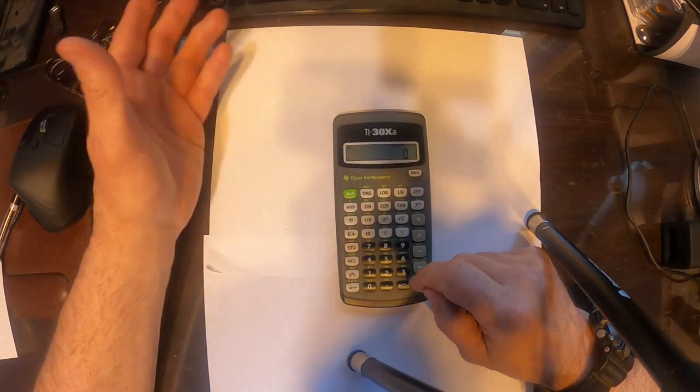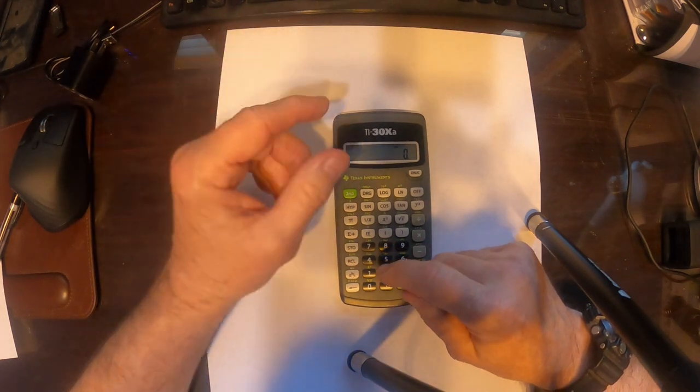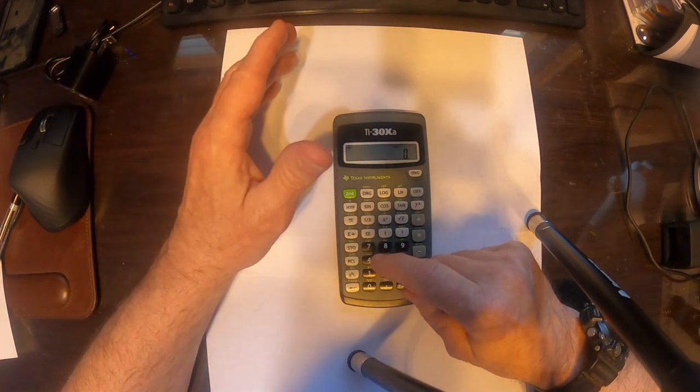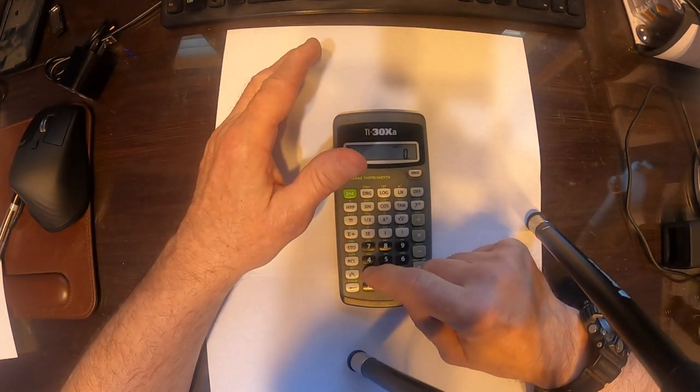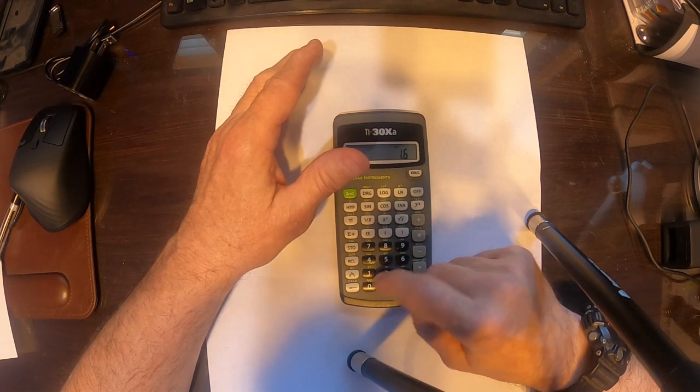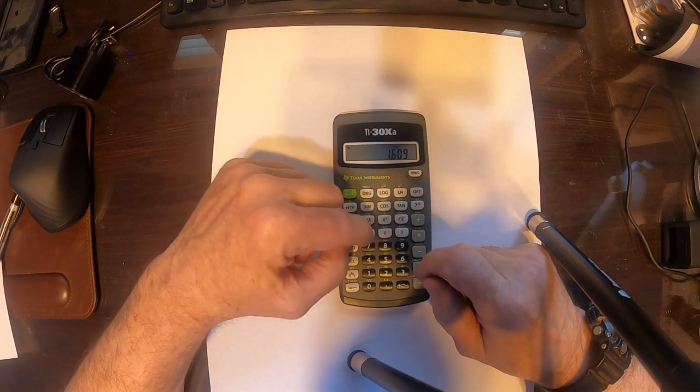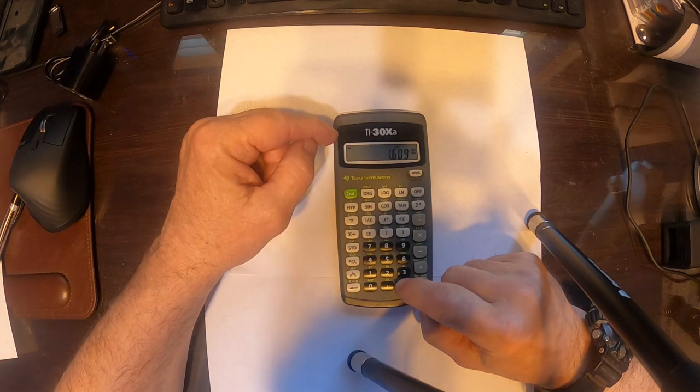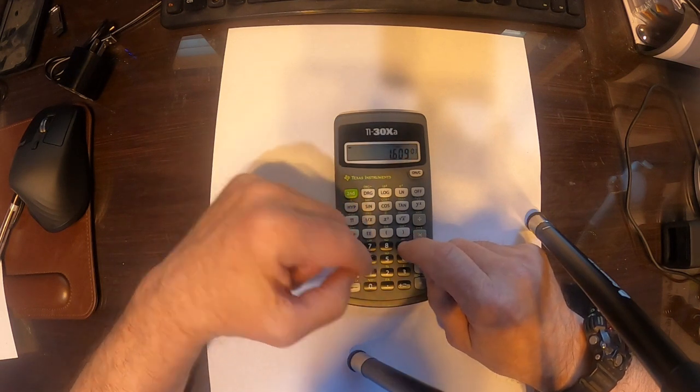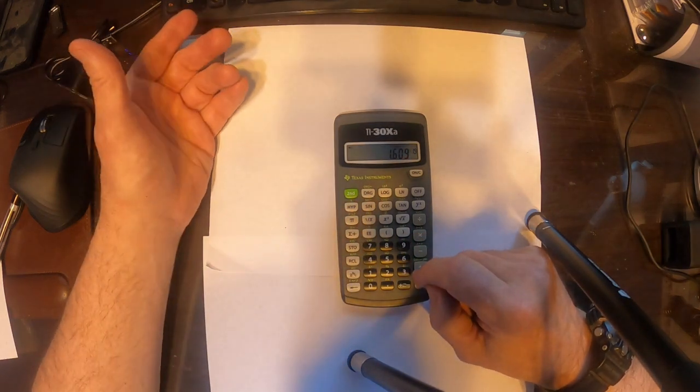All right, so let's say you're putting a negative, you have a negative exponent. Easy. Let's say 1.609 times 10 to the minus 19th. 1.609 EE plus or minus, so that's negative, and then the exponent, 19. And there you go.